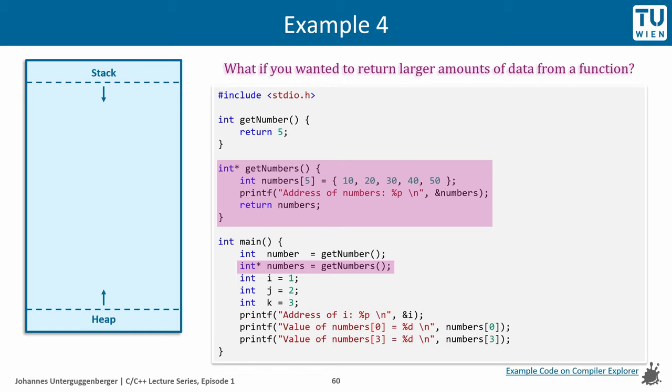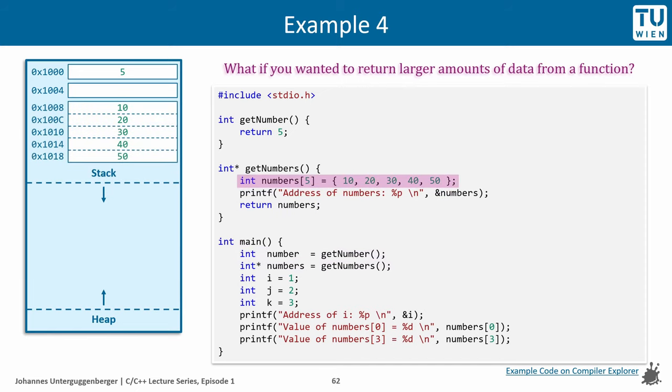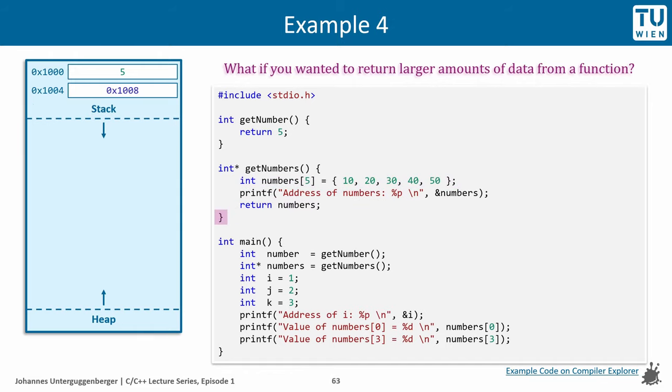Before invoking the getNumbers function from main, we have one integer and one pointer to an integer on the stack. Within the getNumbers function, five more integers are put on the stack, and from an API perspective, they are organized as an array of five integers. This array is returned from the function getNumbers, but what happens at the end of this block? The array is removed from the stack, because it was a stack local array. We have not used malloc or new, so the array was put on the stack, and is now removed at the end of this scope.